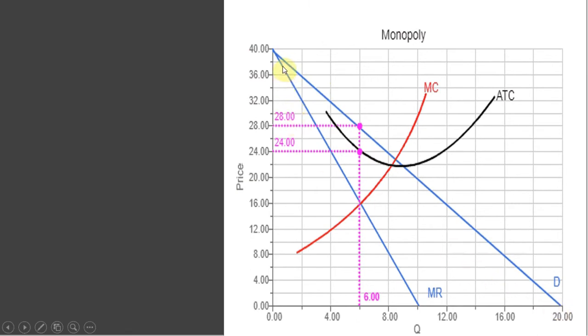The marginal revenue curve for the Monopoly will be twice as steep as demand. So if the demand curve is touching here, the quantity axis at 20, marginal revenue will touch at one-half that distance, or in this case, 10.